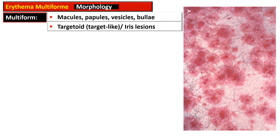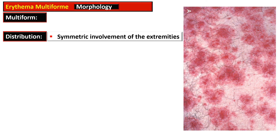Erythema multiforme is named 'multiforme' because it has multiple appearances such as macule, papule, vesicle, or bulla formation. The lesions are termed targetoid, target-like, or iris lesions. In target lesions, there is central erythema surrounded by a paler zone, and this central area may become a vesicle or bulla. The distribution of lesions is variable, with some cases showing symmetric involvement of the extremities.